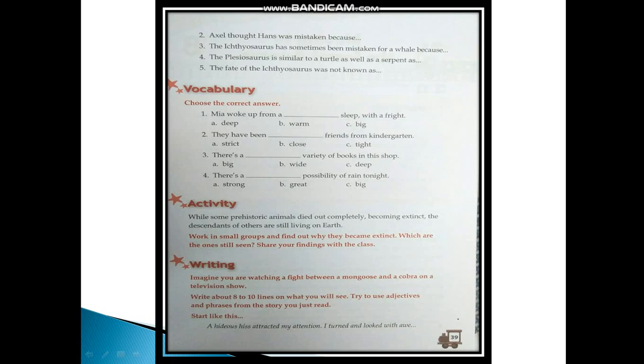Now next is your vocabulary. Choose the correct answer. First is, Mia woke up from a deep sleep with a fright. They have been close friends from kindergarten. Third is, there is a wide variety of books in this shop. And fourth is, there is a strong possibility of rain tonight. So this is how you will use all these words here.